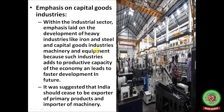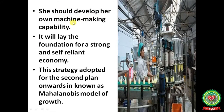Emphasis on capital goods industries: within the industrial sector, emphasis was laid on the development of heavy industries like iron and steel, and capital goods industries such as machinery and equipment, because such industries add to the productive capacity of the economy and lead to faster development in future. It was suggested that India should cease to be an exporter of primary products and importer of machinery, and should develop her own machine-making capability to lay the foundation for a strong, self-reliant economy. This strategy adopted from the second plan onwards is known as Mahalanobis's model of growth.